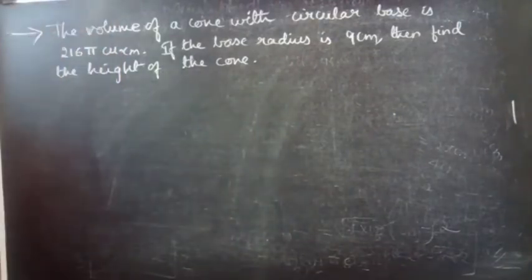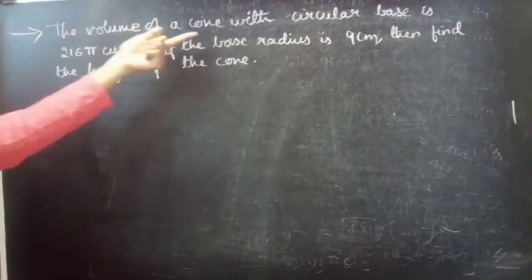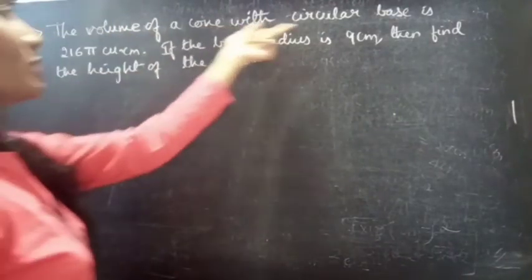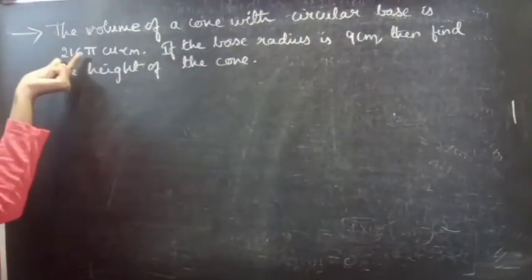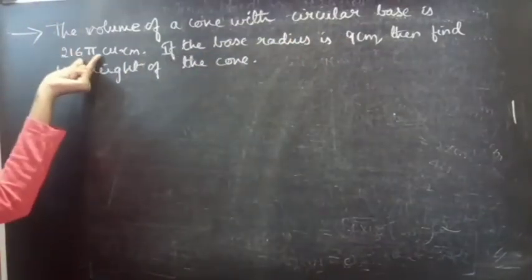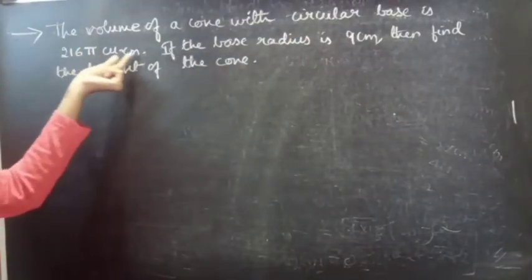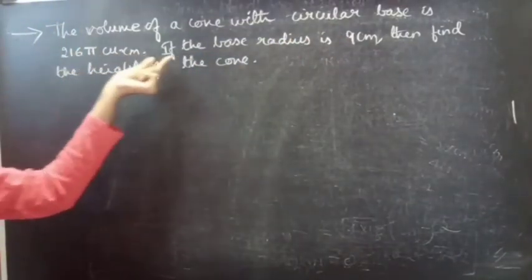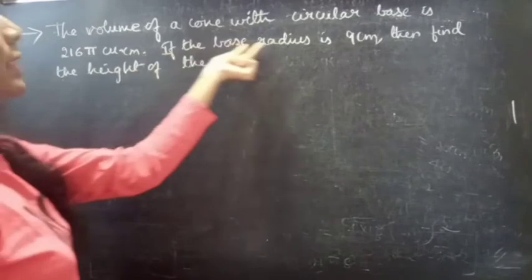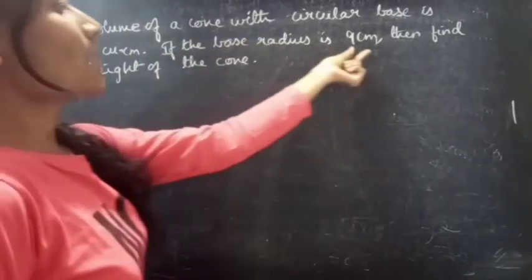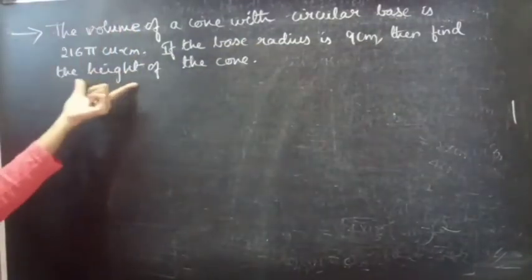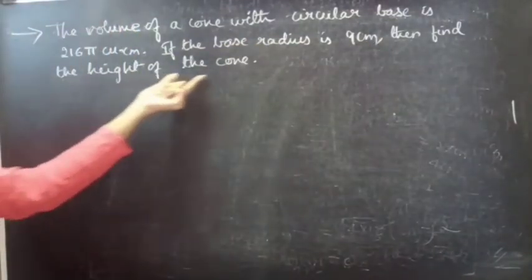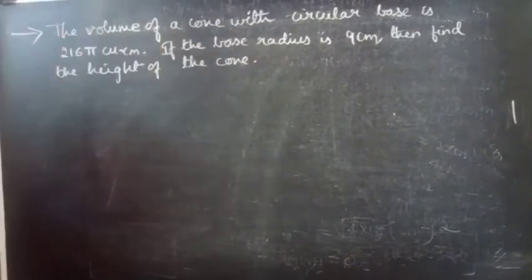So let's get started. The volume of a cone with circular base is 216 pi cubic centimeter. If the base radius is 9 centimeter, then find the height of the cone.